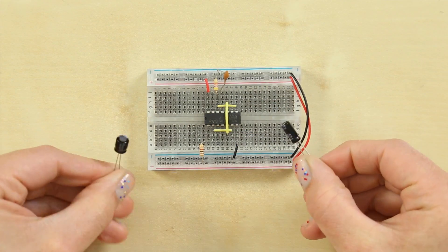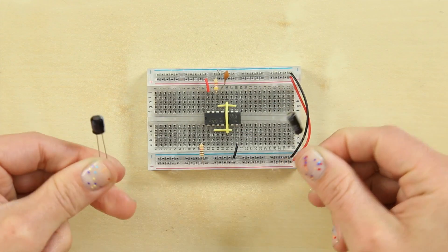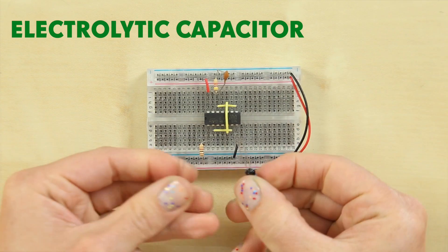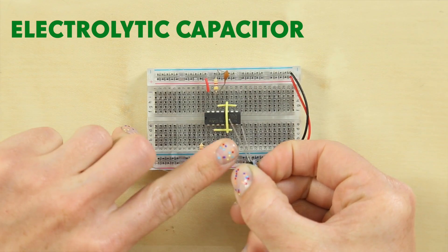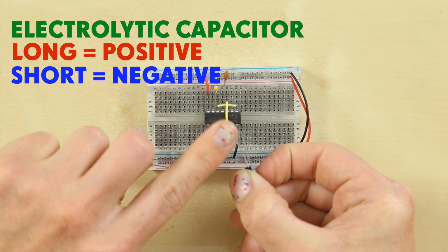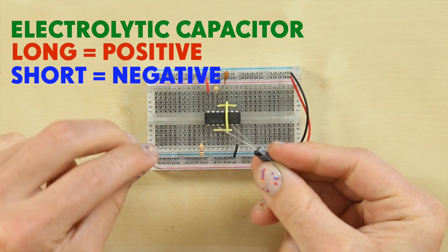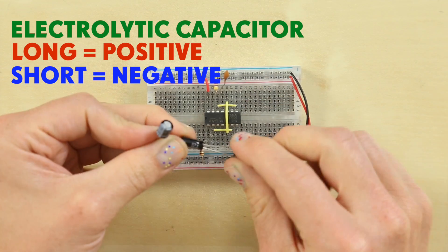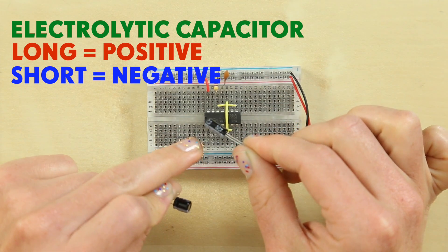The next type of capacitor you'll find in your kit are electrolytic capacitors. These ones are polarized. Looking at the length of the leg you'll see that one leg is longer than the other. This is the positive leg. It's important which way these go in the circuit. These ones also have different values. We have our 10UF capacitor and our 100UF capacitor.